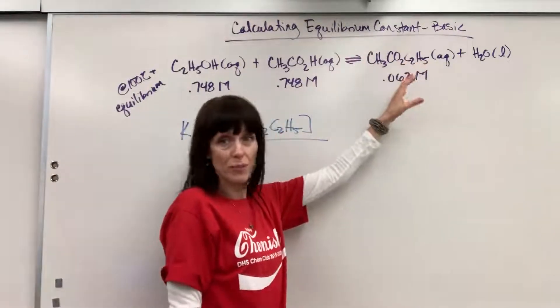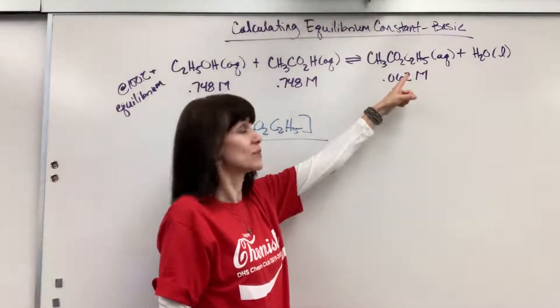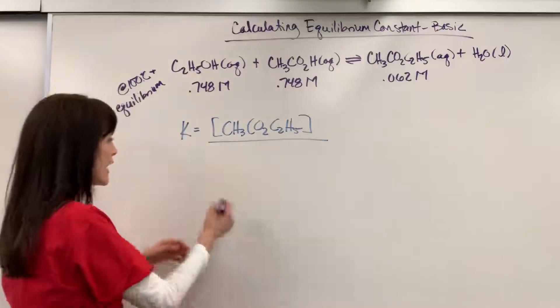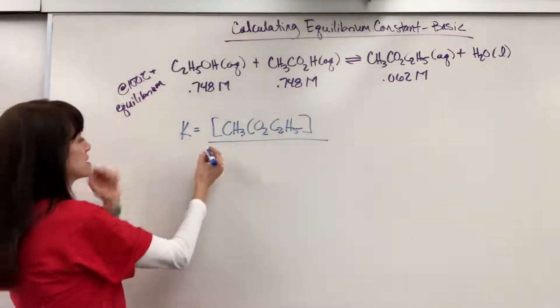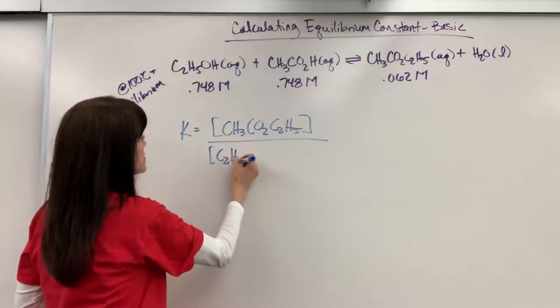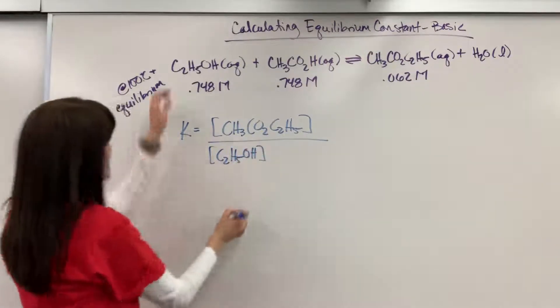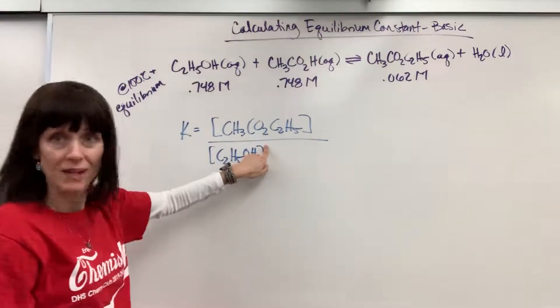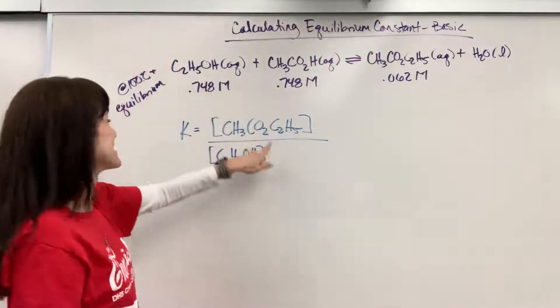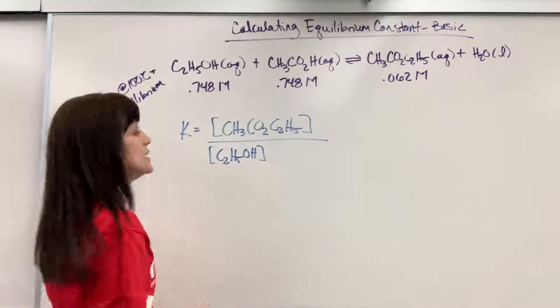So I have everything I need from the products. That was the only aqueous. It was our ethyl acetate divided by reactants. This is ethanol. So C2H5OH. That's a one exponent, so that would be an understood one coefficient, so that's an understood one exponent. Times.